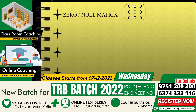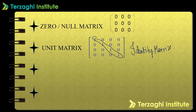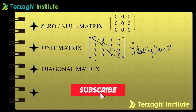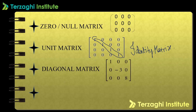Zero or null matrix: all elements in the matrix are zero. Next is the unit matrix, also called the identity matrix. In the unit matrix, the leading diagonal elements are one. It is a square matrix in which the leading diagonal elements are one.